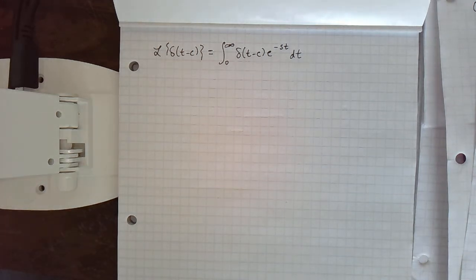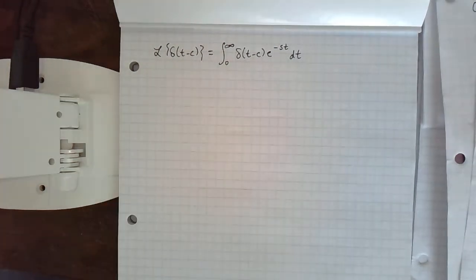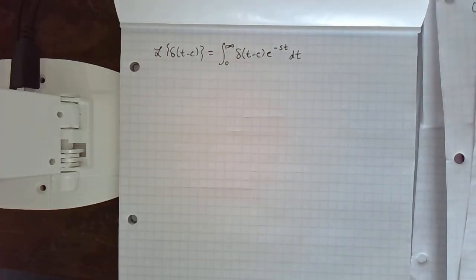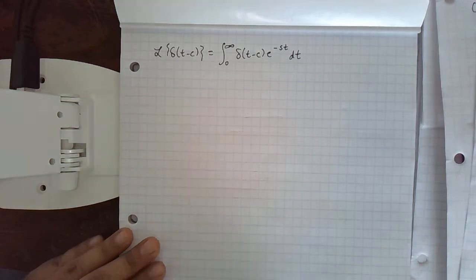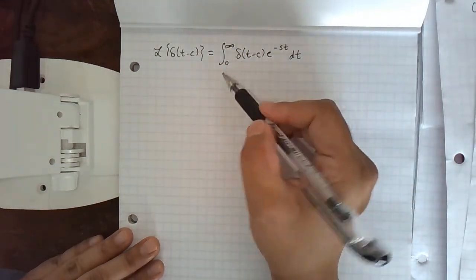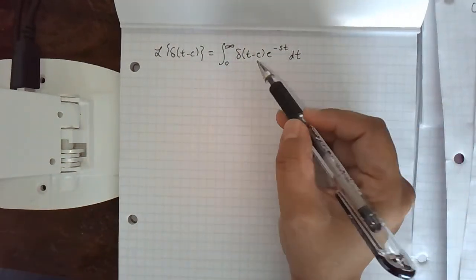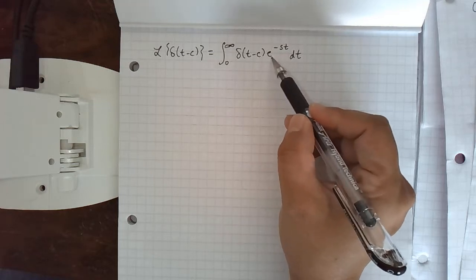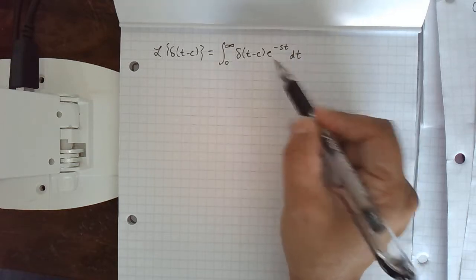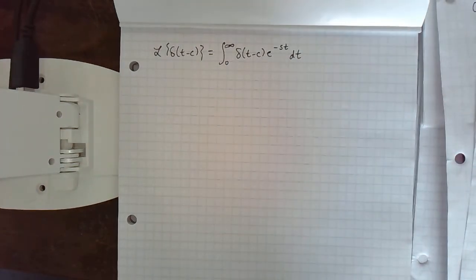We're moving towards being able to solve differential equations involving the Dirac delta function. In order to do that, we need to find the Laplace transform of the function. We do that by definition. We take the integral from zero to infinity of the Dirac delta function times e to the negative st dt. That's part of the formula for Laplace transform.